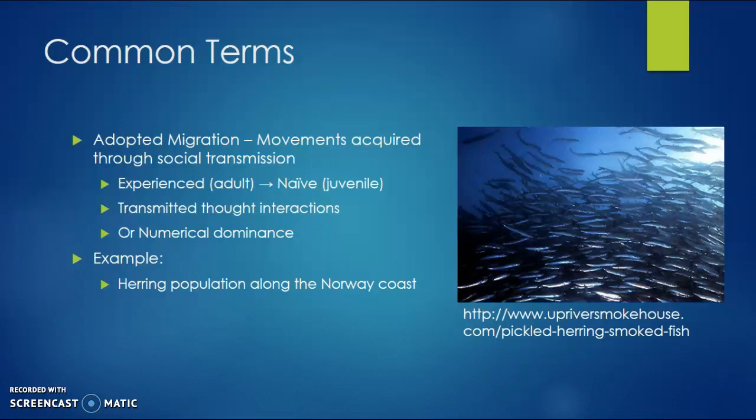These individuals behaved as though they were from the spring spawning population — they had adopted resident behaviors. This is termed a culture population because they learned their behaviors from the adult or experienced fish. This is adopted migration because their migratory movements are acquired through social transmission.